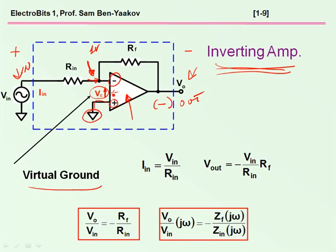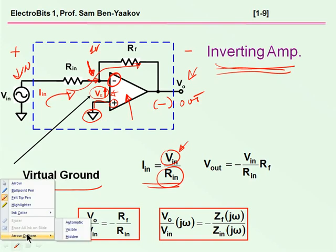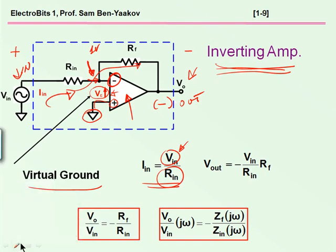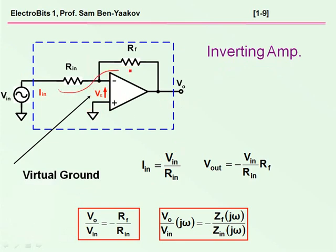So, now, under this assumption that we have a virtual ground at the negative input terminal, the current coming into the amplifier, this current here, is the input voltage divided by the resistance because this is the voltage being imposed on the resistance,